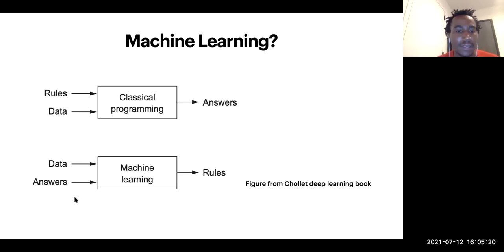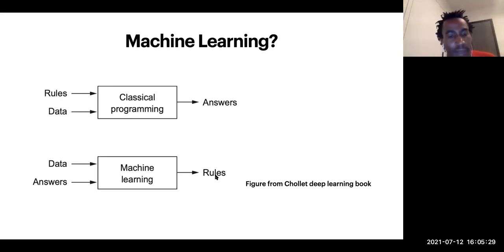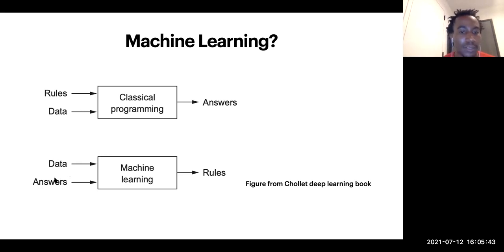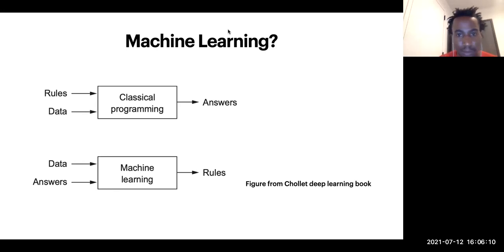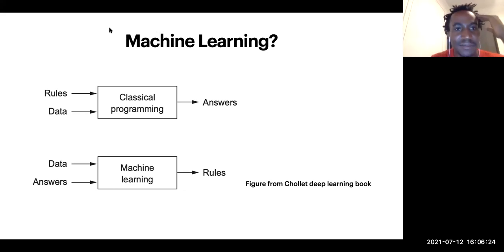Machine learning is different. In machine learning, you give the data and the answers and you want to know what the rules are. Using the same analogy of odd and even numbers, I would feed the machine odd and even numbers I already know the labels for, and the machine tells me the rules to determine if a number is odd or even. In astronomy or physics this is just another type of model you can fit to your data — you can look at it as a way of getting rules out of your data.